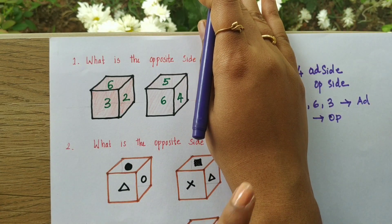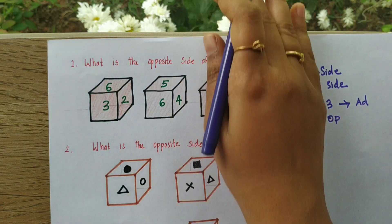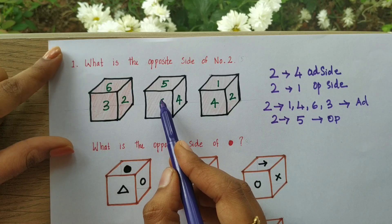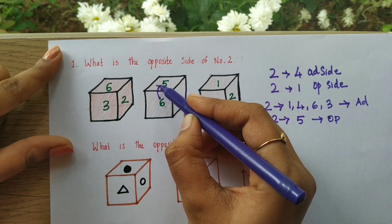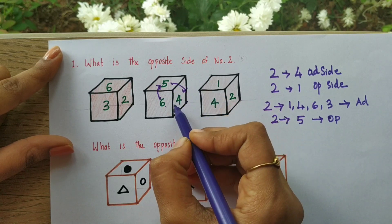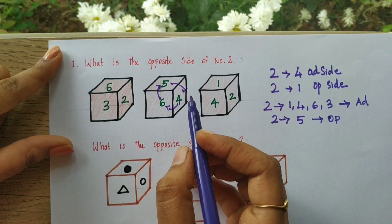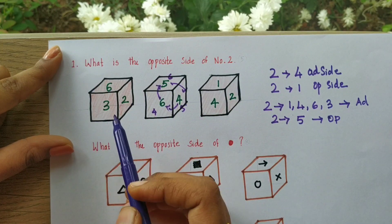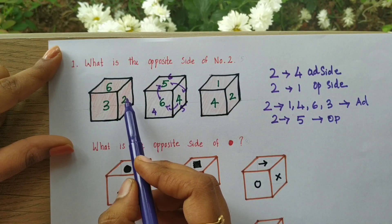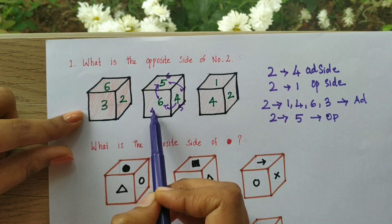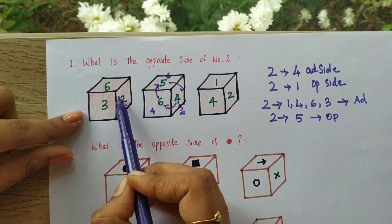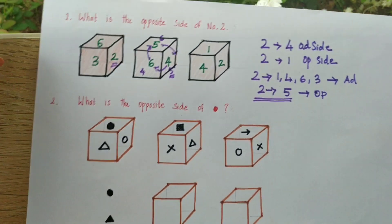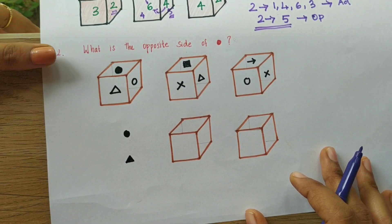Now let's consider the two cubes given. We can see six is common in both. We move six to the same position — this will come here and this will come here — giving us three, four, five, five, and six in the new position. Now since six is aligned, the opposite of four is three and the opposite of five is two. So two has an opposite of five. We got the same answer.